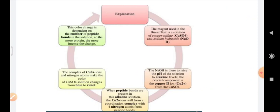And the crucial component is the copper Cu2+ ion from the copper sulfate. When the peptide bonds are present in this alkaline solution, the copper 2+ ions will form a coordination complex with the 4 nitrogen atoms from the peptide bonds. The complex of the Cu2+ ions and the nitrogen atoms makes the color of copper sulfate solution changes from blue to violet.